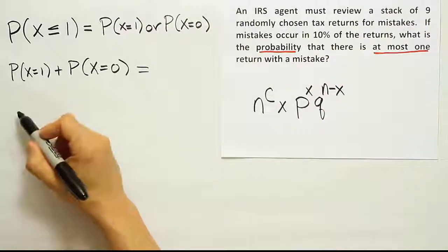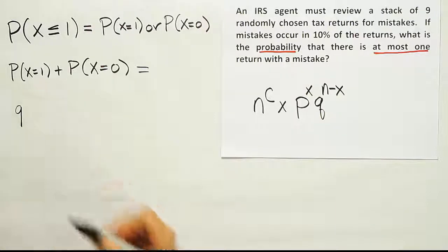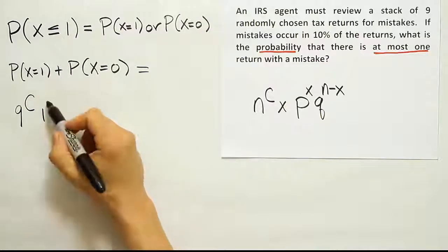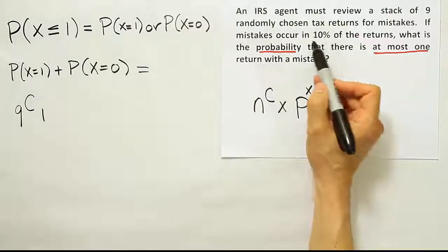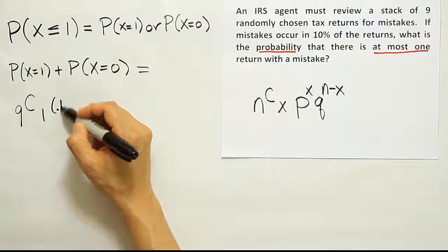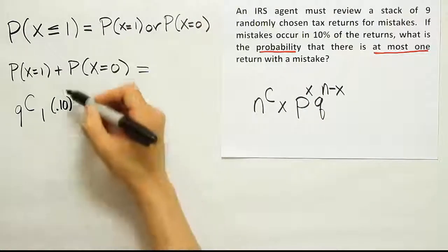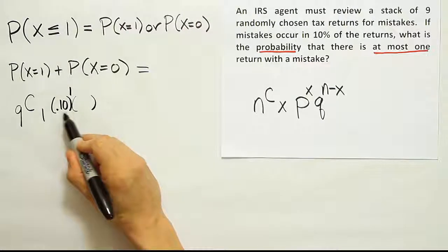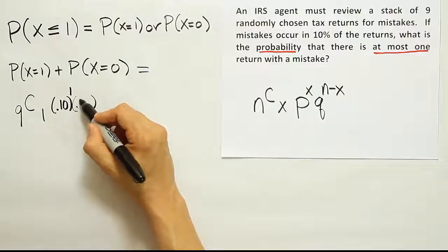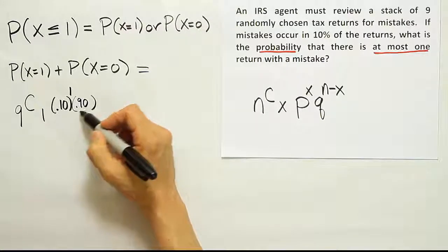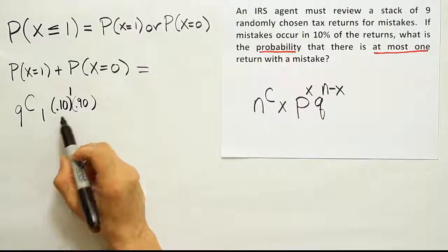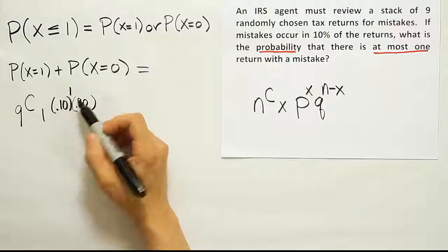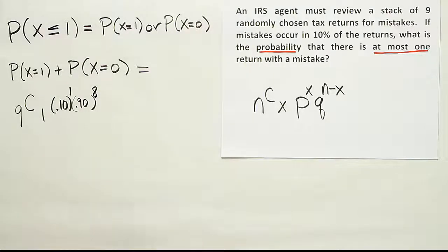n in this problem is nine. There are nine returns being looked at. We're going to choose one here to have a mistake. The probability that a return has a mistake is 10%. So we're going to say 0.10 to the one power. And then there's a 90% chance that there's no mistakes. So if one return out of nine is going to have a mistake, the remaining eight returns do not have a mistake.